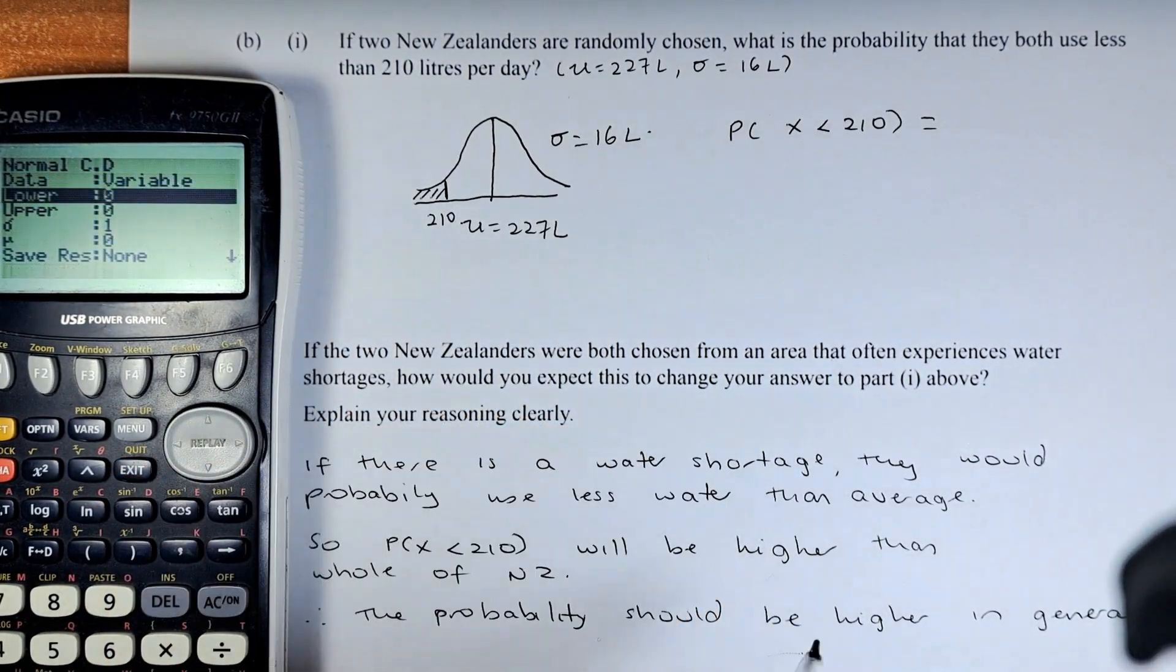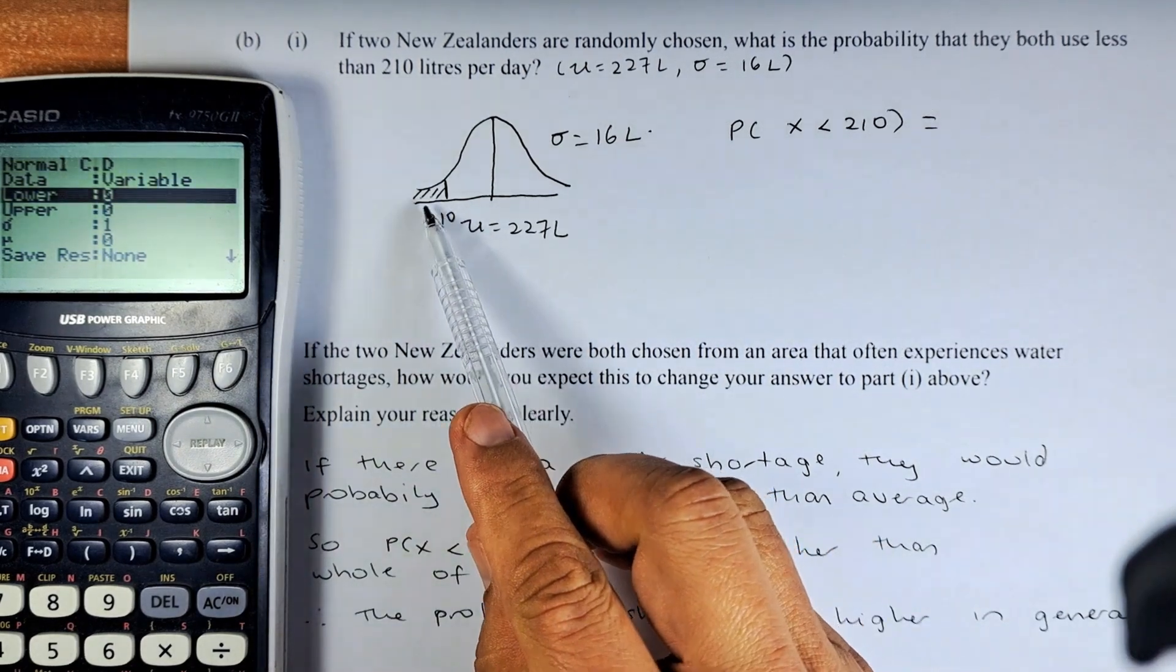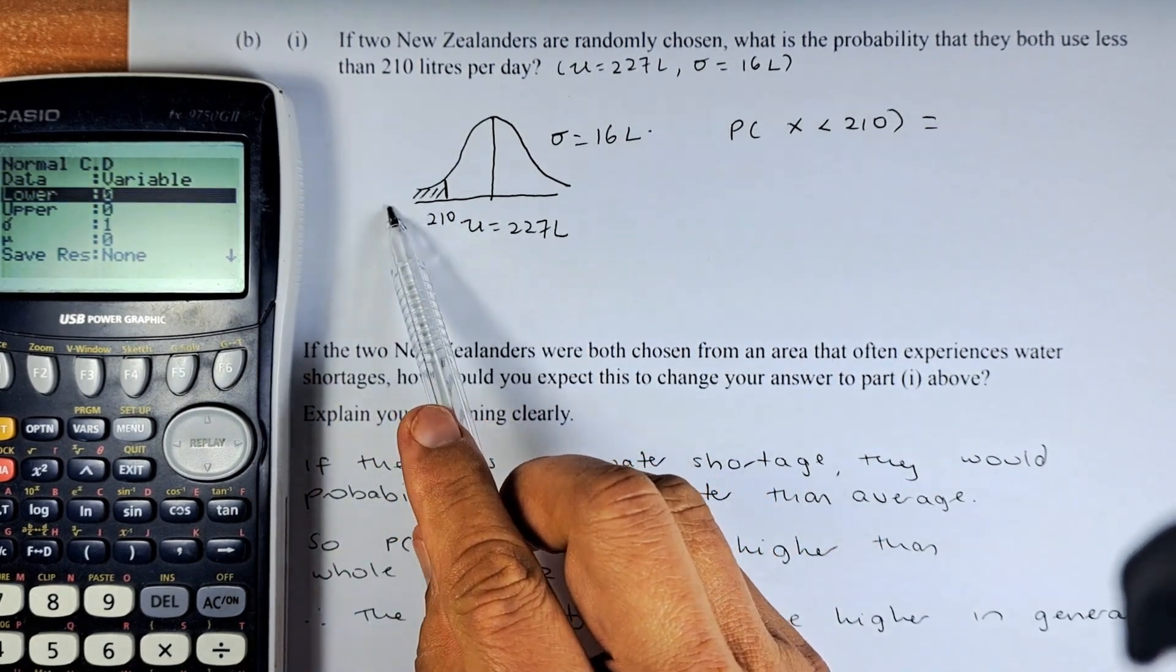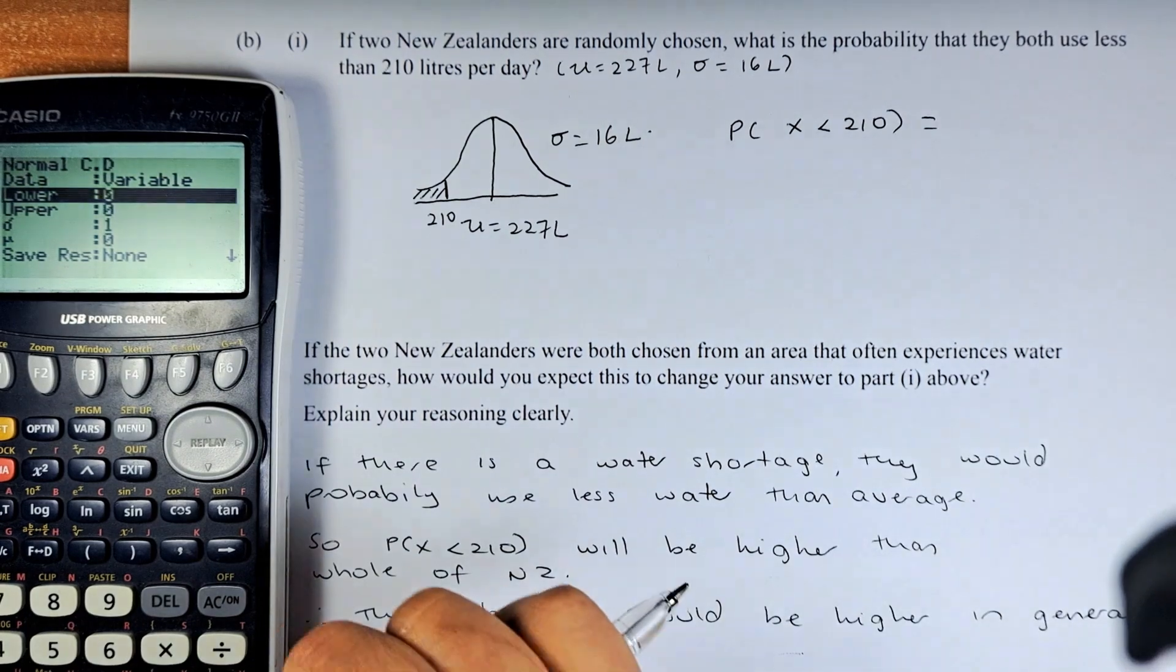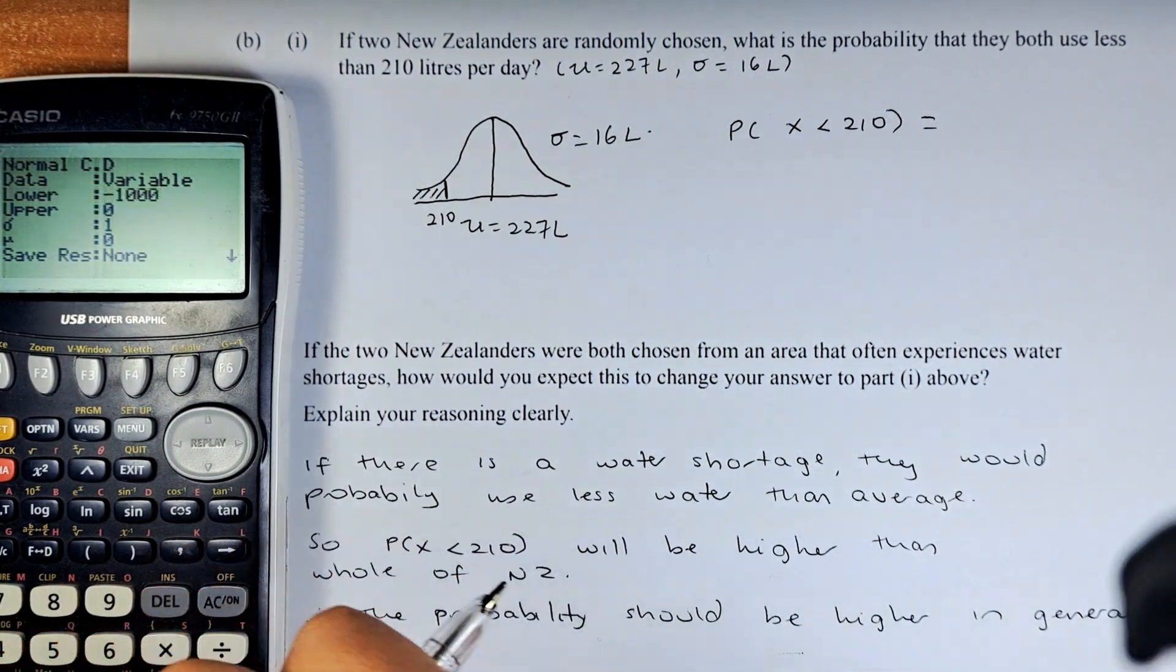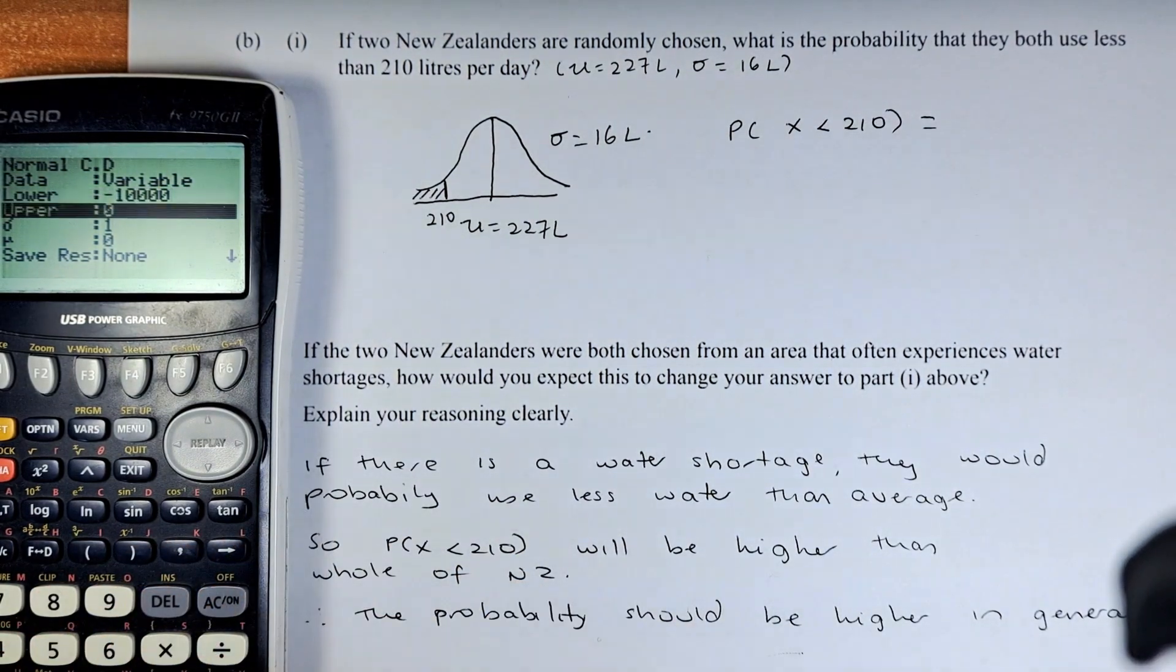To get the lower, is where the graph is going to start. The graph is going to start somewhere here. So it is going to be any negative number. Negative 10,000. Okay. Then you press the execute button.